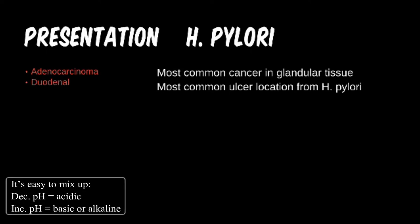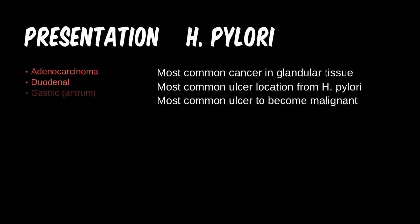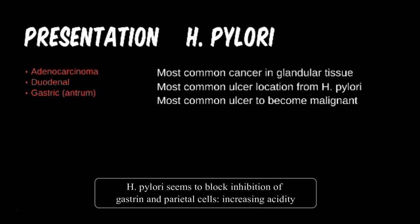Lastly, which location of ulcer is most likely to become malignant? Some studies have shown potential connections of H. pylori in many cancers, but there's been relatively low strength and just as many contradictory studies. Gastric adenocarcinoma, especially of the antrum, is the most common malignancy associated with H. pylori infection.